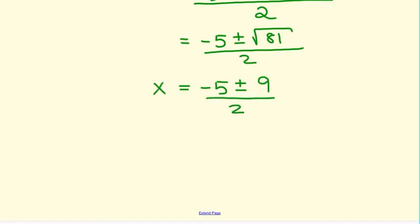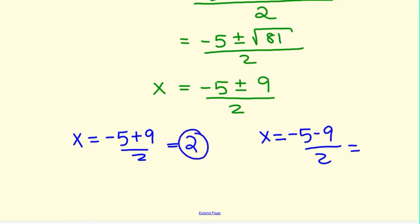This is what x equals. Now what I do is I just break up the equation into two equations. Negative 5 plus 9 over 2. And then x equals negative 5 minus 9 over 2. And simplify those. Negative 5 plus 9 is 4. Divided by 2 is 2. So there's your first answer.